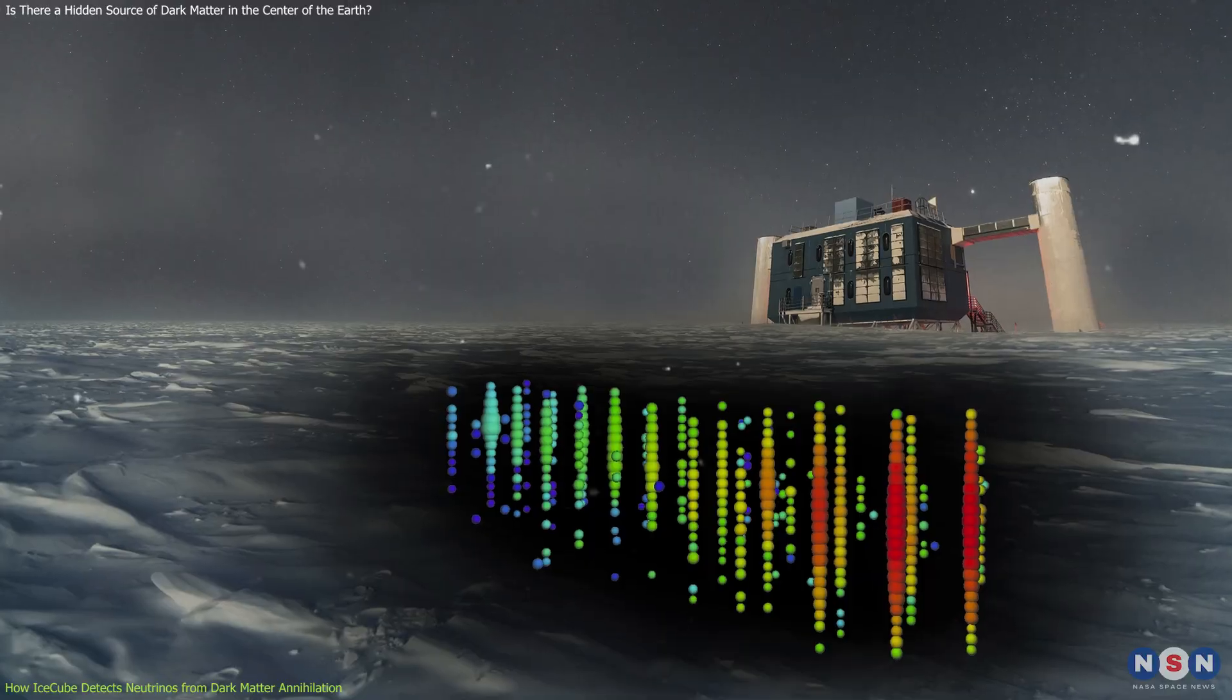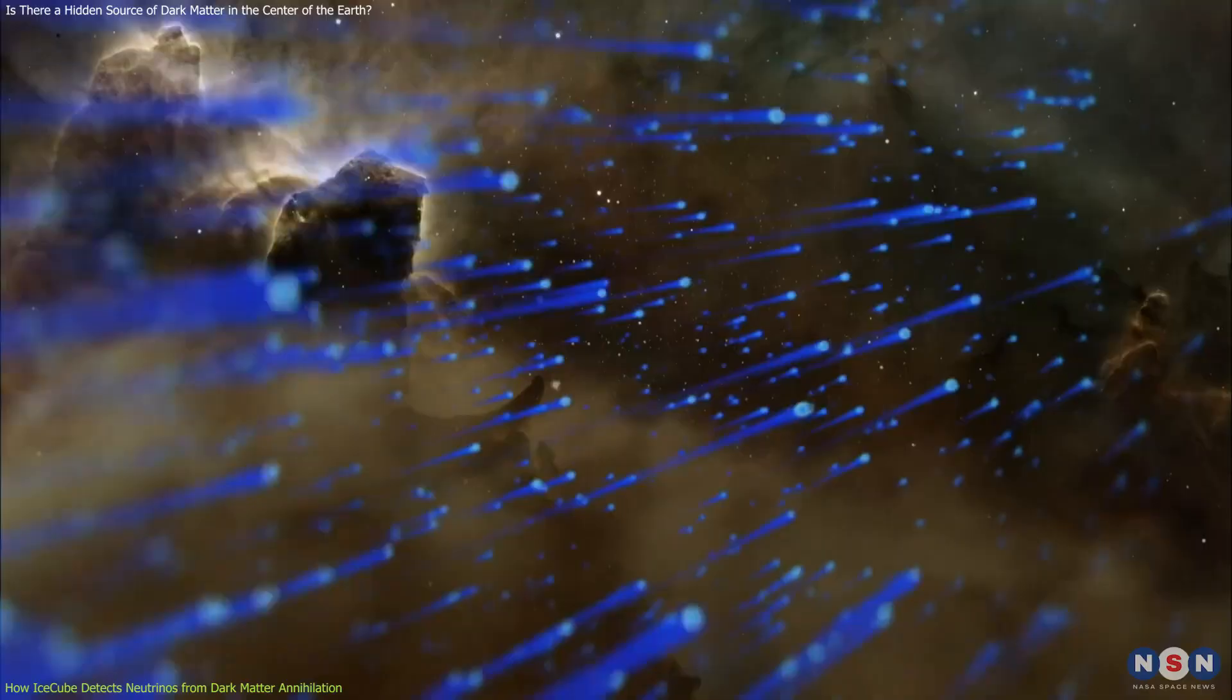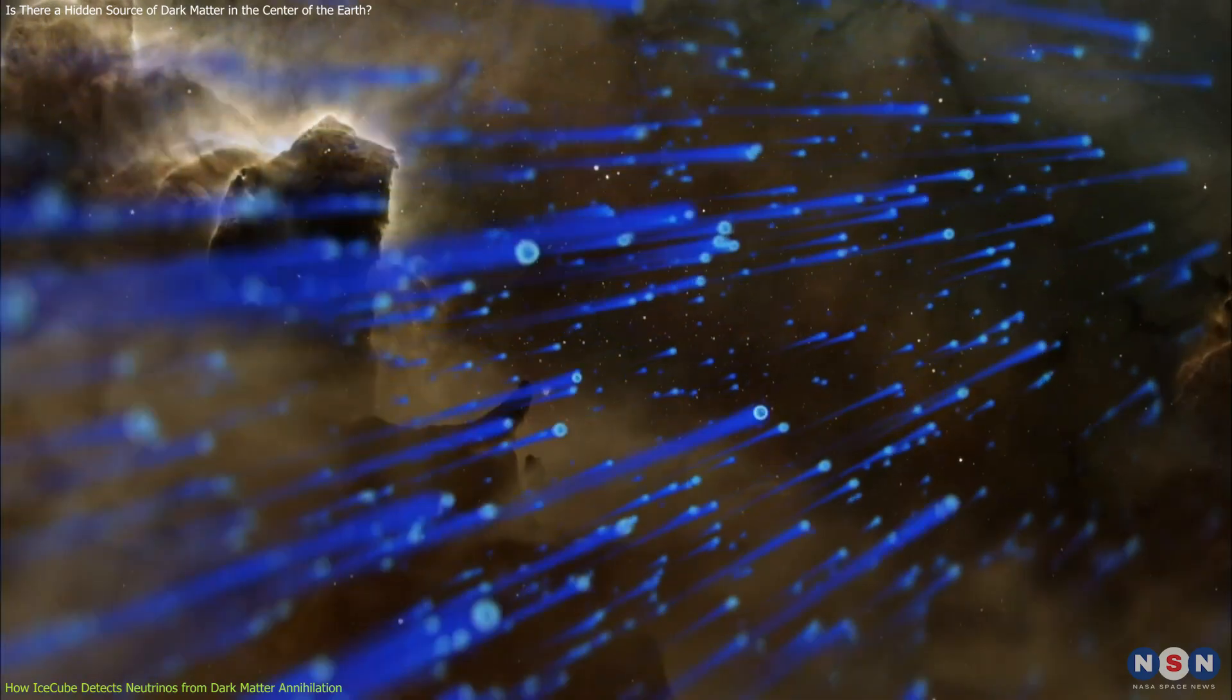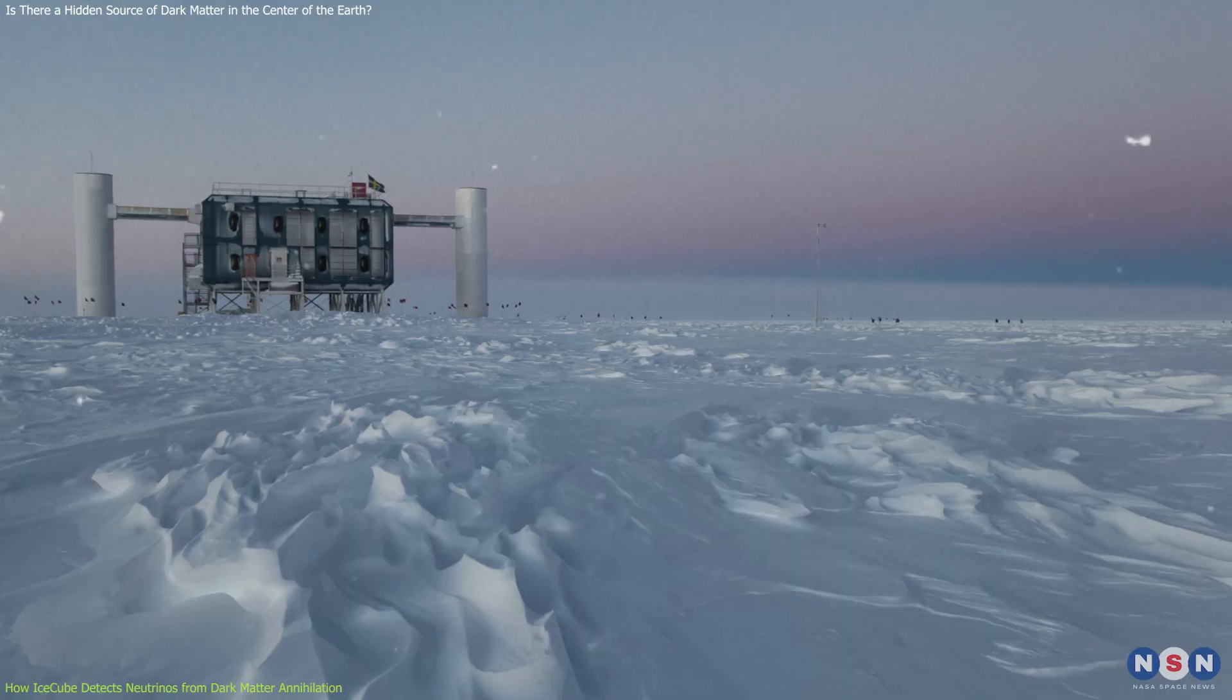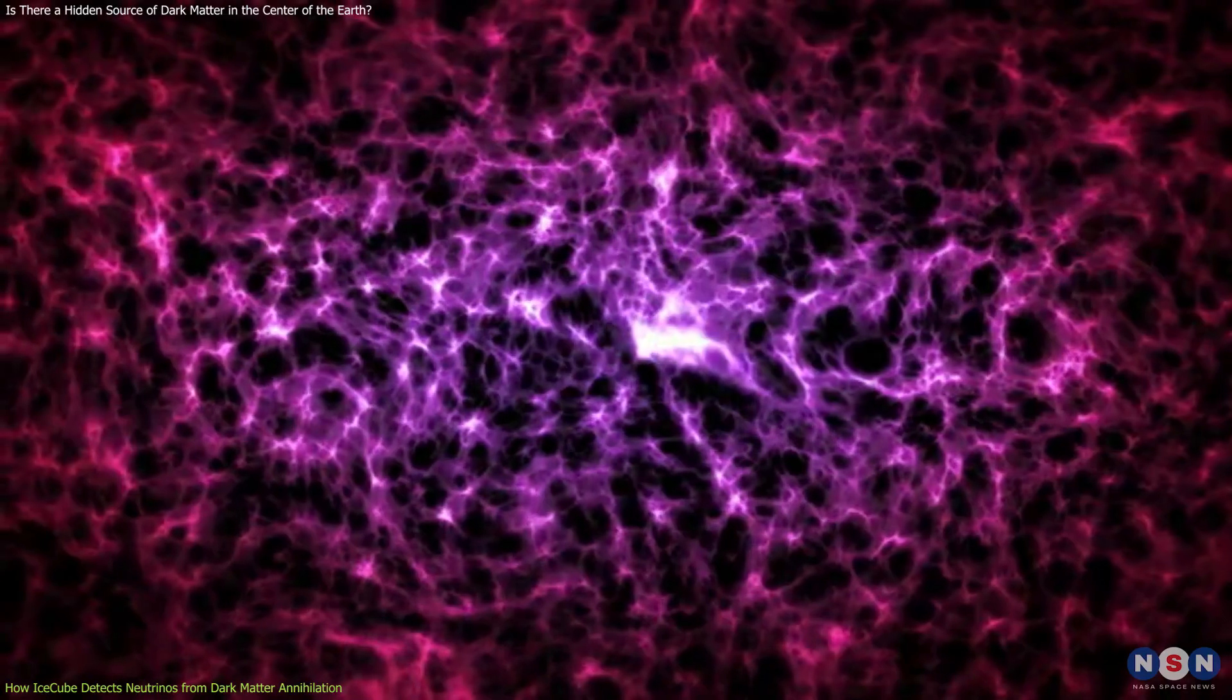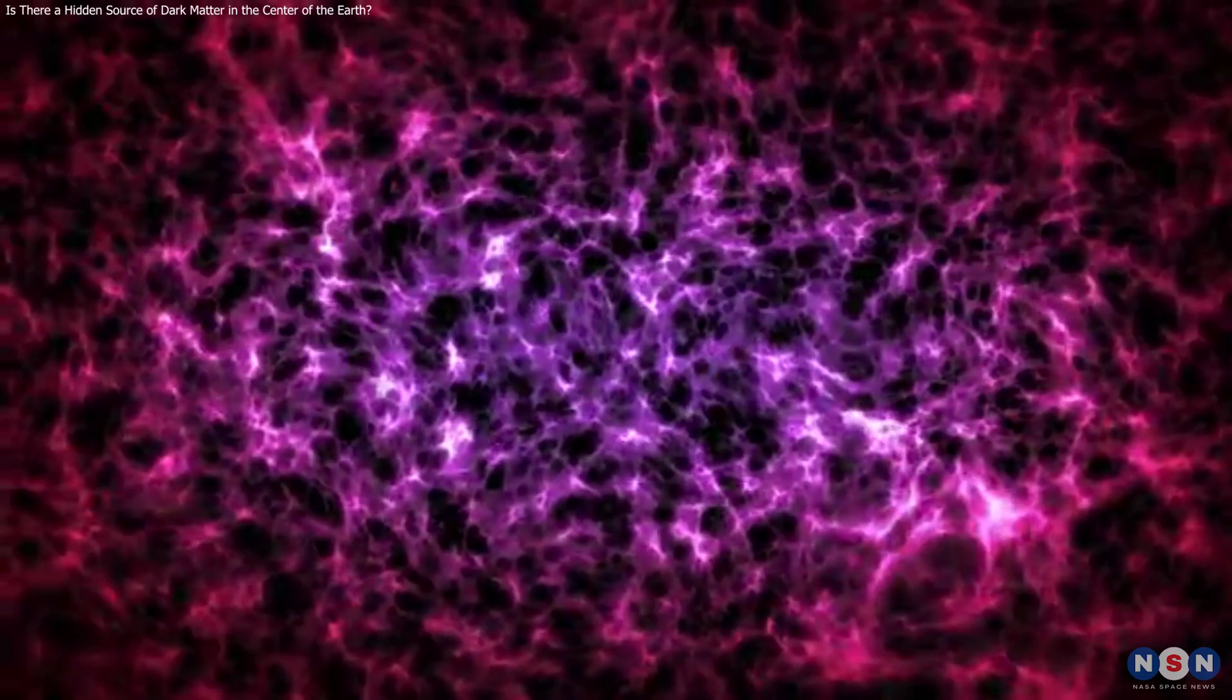Isn't that amazing? IceCube is like a giant eye that can see through the Earth and into the dark. It can capture some of the most elusive and energetic particles in the universe and reveal their secrets. But what did IceCube find? Did it see any signs of dark matter annihilation? Let's find out in the next section.